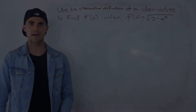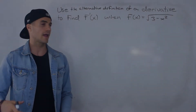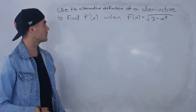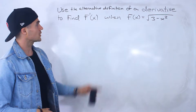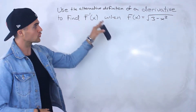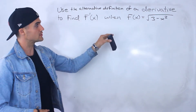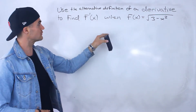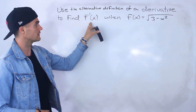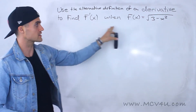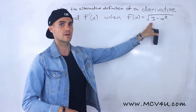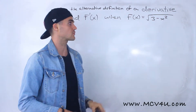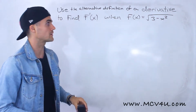What's up everyone, welcome back. Patrick here, and in this video we're going to use the alternative definition of a derivative to find f prime of x when f of x is equal to the square root of 3 minus x squared.